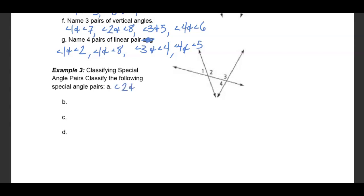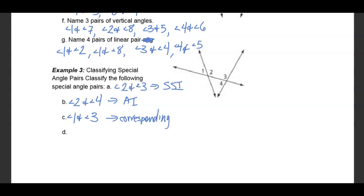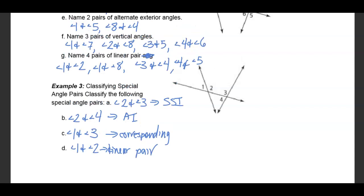Angles 2 and 3 would be considered same-side interiors. Angle 2 and angle 4 are alternate interior angles. Angle 1 and angle 3 are corresponding. Angle 1 and angle 2 are a linear pair. These are incredibly visual — you have to have the diagrams drawn to make sure you understand what's going on.